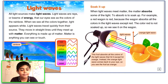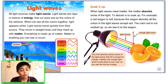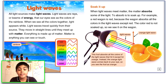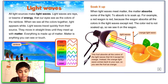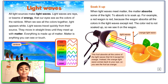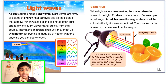Light waves. All light sources make light waves. Light waves are rays or beams of energy that our eyes see as the colors of the rainbow. When we see all the colors together, light appears white. Light waves travel quickly from their source. They move in straight lines until they meet up with matter. Everything is made up of matter — matter is anything you can see or touch.